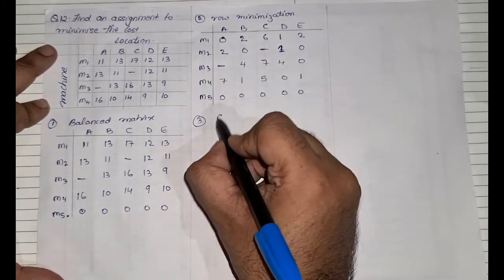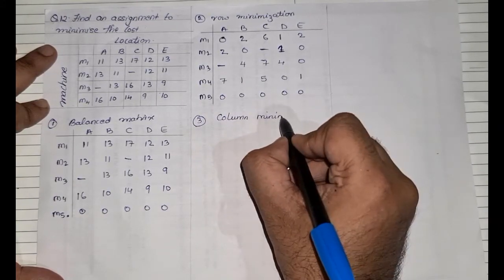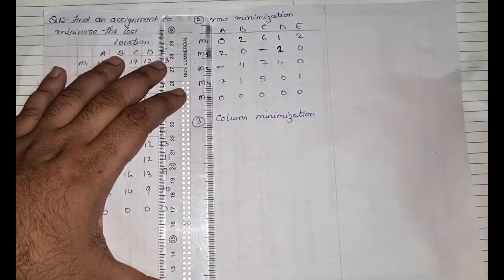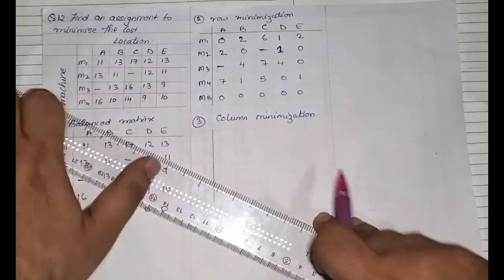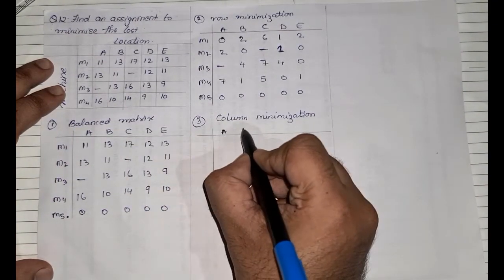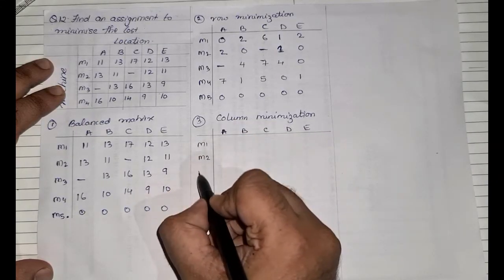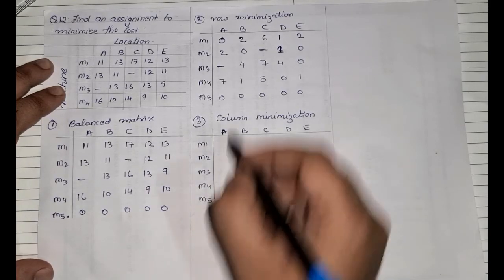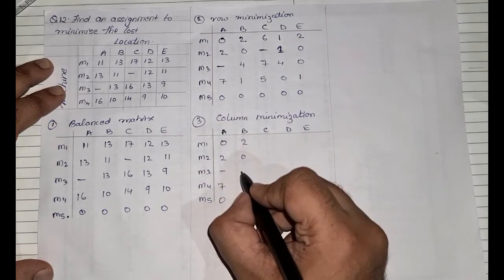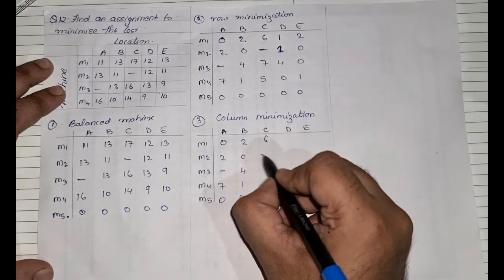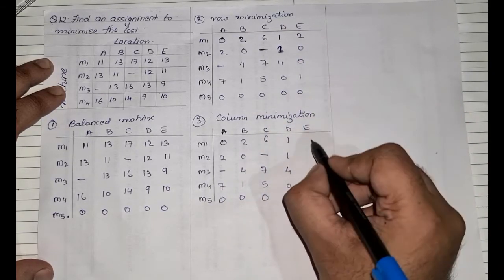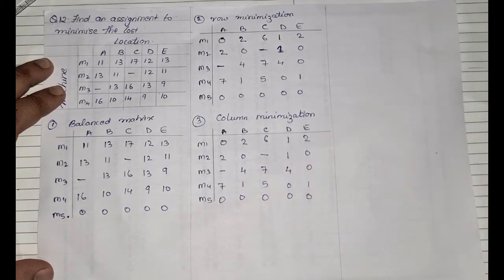Step three is column minimization. We find the lowest value in each column and subtract it. In each column, the lowest value is already 0, so all values remain the same after column minimization. The matrix is unchanged.